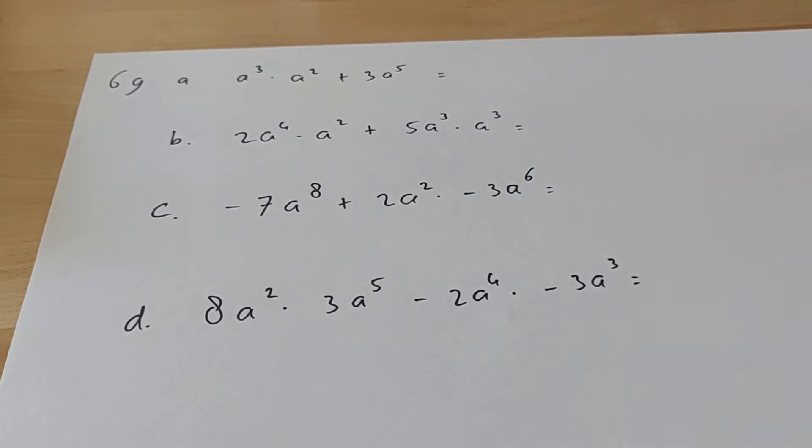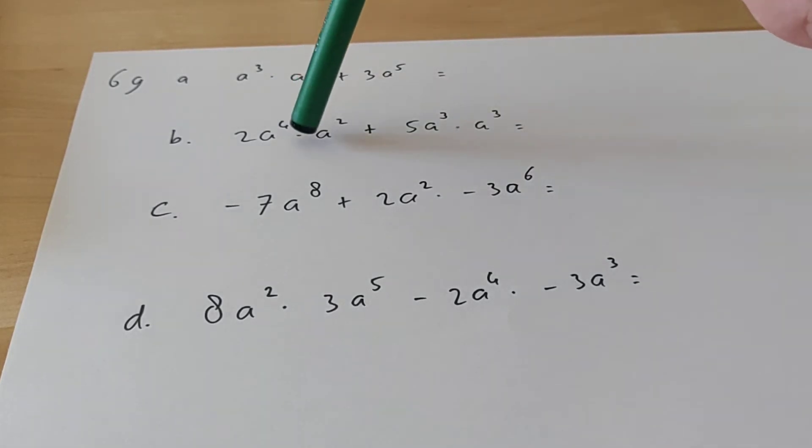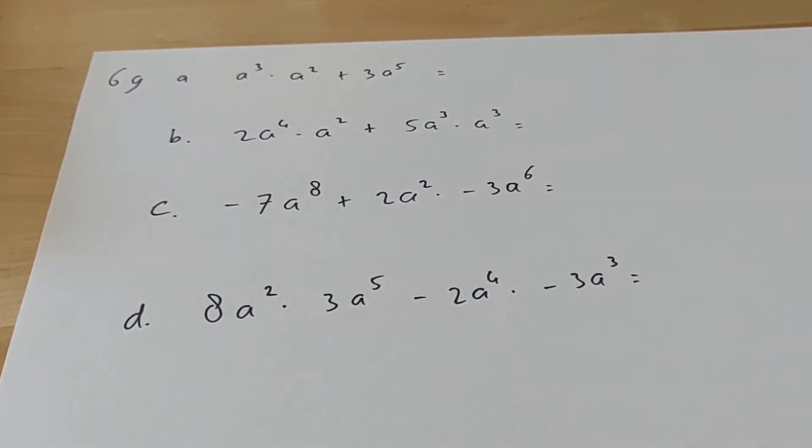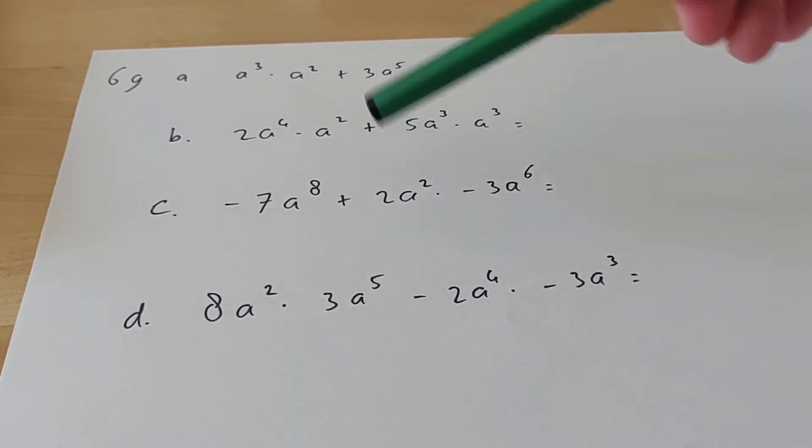In the order of operations, it says that first you have to do times, so we're going to do this first, that first, that first, all of that. And then we're going to do plus and minus after that.